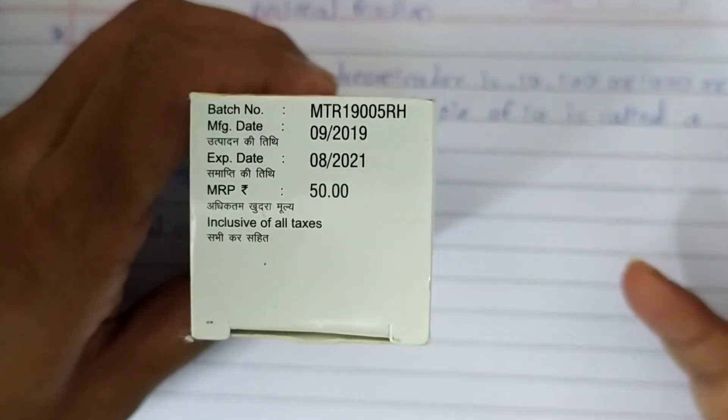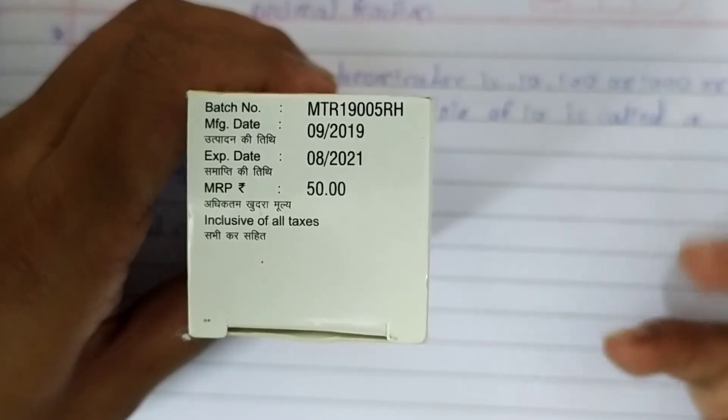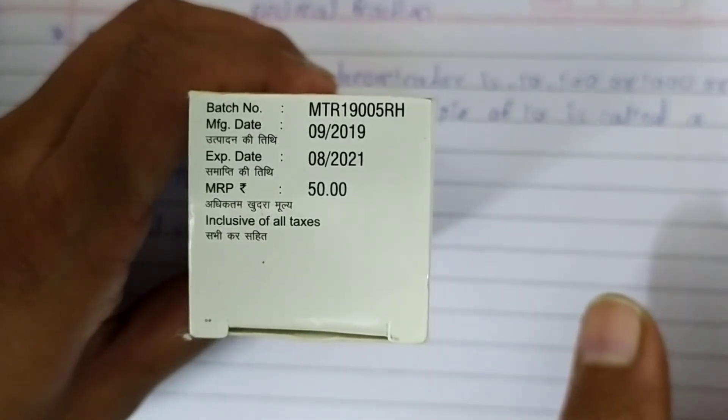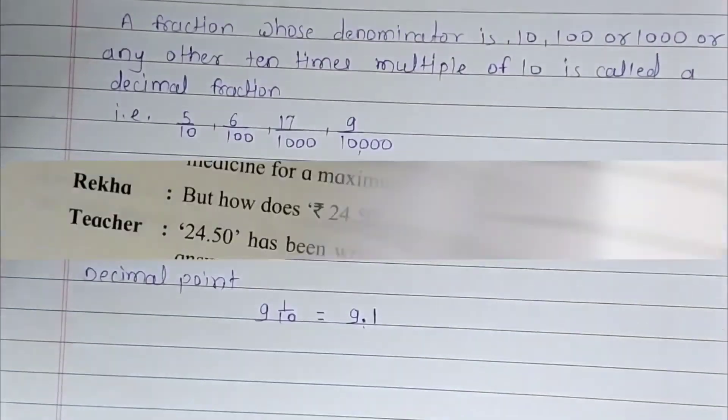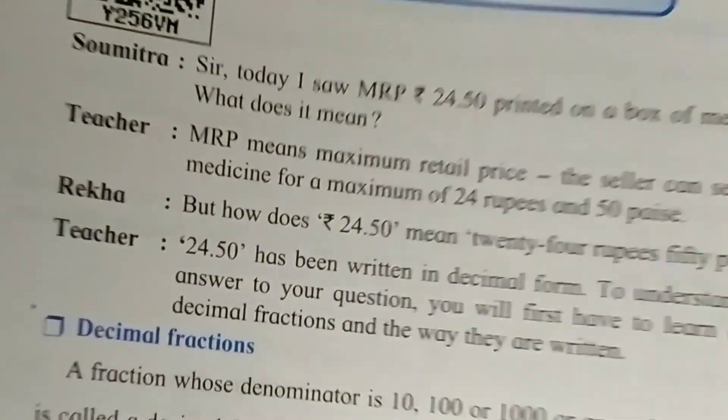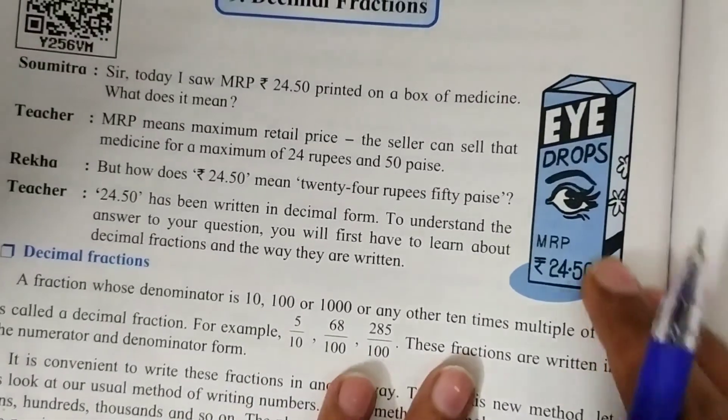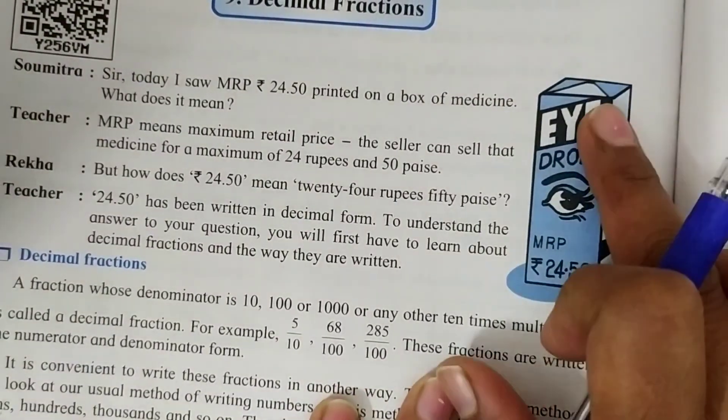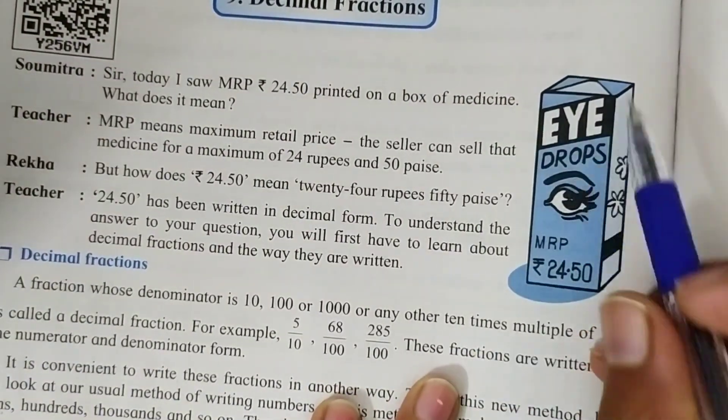Look here, MRP rupees 50.00. Sometimes we can see there are numbers after the decimal point for some medicines, like 15 rupees and 75 paise. They write it as 15 point 75.